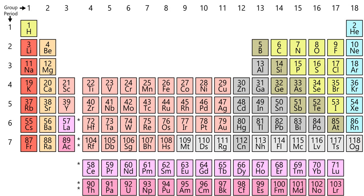As of 2016, the periodic table has 118 confirmed elements, from element 1 to 118. Elements 113, 115, 117, and 118, the most recent discoveries, were officially confirmed by the International Union of Pure and Applied Chemistry in December 2015. Their proposed names — Nihonium, Moscovium, Tennessine, and Oganesson, respectively — were announced by the IUPAC in June 2016 and made official in November 2016. The first 94 elements occur naturally; the remaining 24, Americium to Oganesson, occur only when synthesized in laboratories. Of the 94 naturally occurring elements, 83 are primordial and 11 occur only in decay chains of primordial elements.